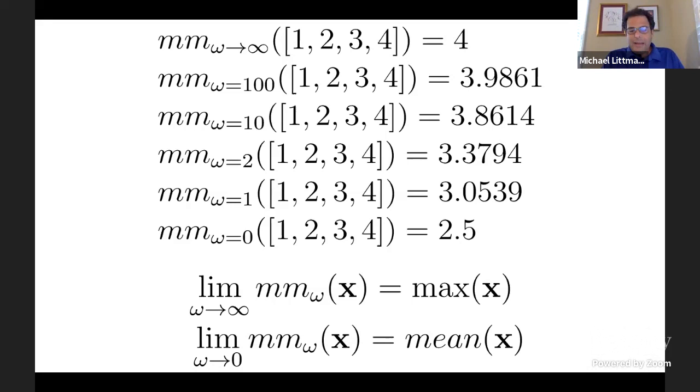But any vector values that we've got as this parameter omega goes to infinity, it becomes the max operator. And as this omega gets cranked down to zero, it becomes mean. And if you just keep cranking it back and go to negative infinity, it becomes min. So it's sort of, you know, everything you could possibly want. It's the Swiss army knife of averages.